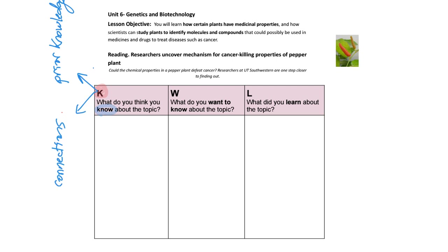We can even write examples. In the second column, the W column, we are going to write things that we would like to know about the topic from the reading. And the final column, the L column, is going to be about things that we learn from the reading — we will fill that out after we read the article.